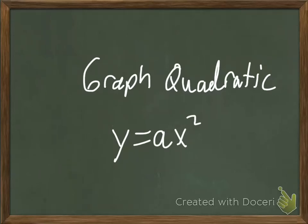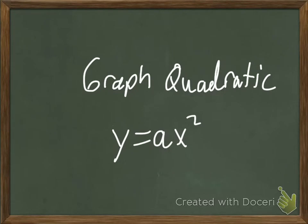Welcome to a video on graphing quadratic functions. We're going to start with the basic y equals a times x squared. Our quadratic graphs are going to look a little different than our linear graphs and our absolute value graphs. They're actually going to look more like our absolute value - kind of like a U shape. Where our absolute value looks like a V shape, this is going to look like a U shape.